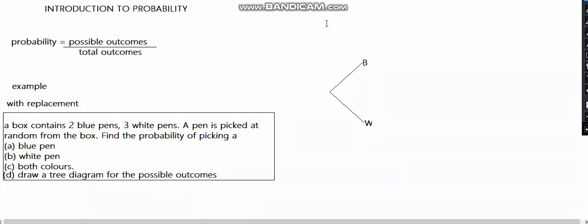Since only one pen was picked, we only have one selection. The probability of picking a blue pen is 2/5. This is the only selection we have. If two pens were being picked, we could have drawn another branch to show two pens are picked, hence more possible outcomes.